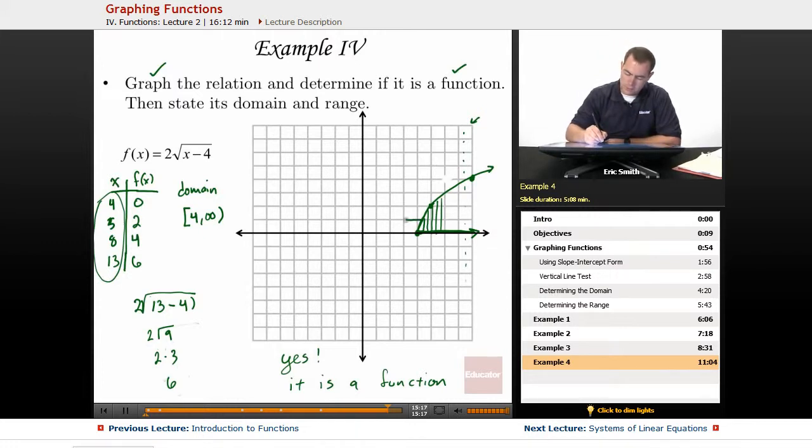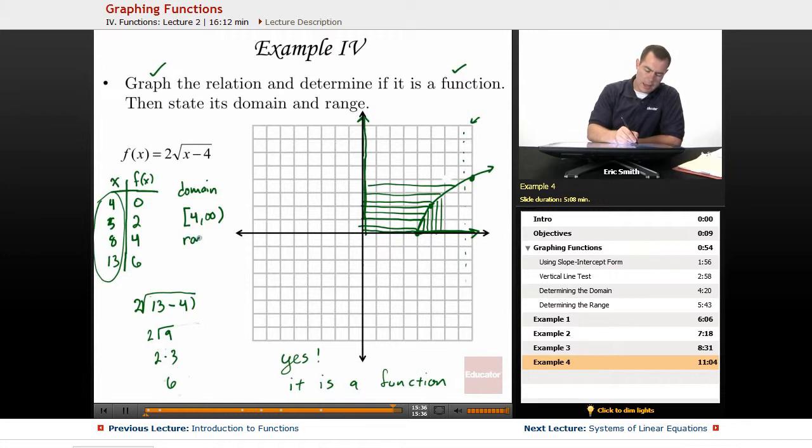If I take all of the same values and I start to trace them back to the y-axis, it will shade in a lot of other values. But it looks like nothing less than 0. So we'd shade in all of that. And now we have our range from 0 up to infinity.